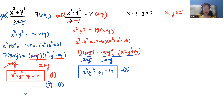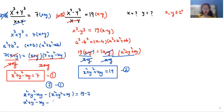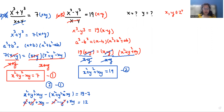Now subtracting equation 5 from equation 6: x squared plus y squared plus xy minus x squared plus y squared minus xy equals 19 minus 7. So x squared plus y squared minus xy minus x squared minus y squared plus xy equals 12. The x squared and y squared terms cancel, and xy plus xy gives 2xy equals 12, so xy equals 6.